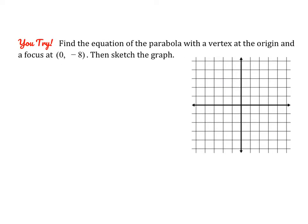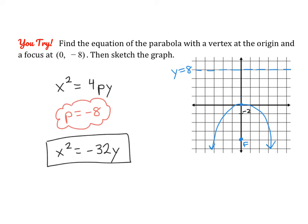Go ahead and pause the video and give this example a try. Based on where the vertex and focus are, this is a downward-facing vertical parabola. The p-value is −8, because that's the distance between the vertex and the focus and we are going down. Substituting into standard form gives us our equation. Note that the directrix is at y = 8 — that's p units in the opposite direction.